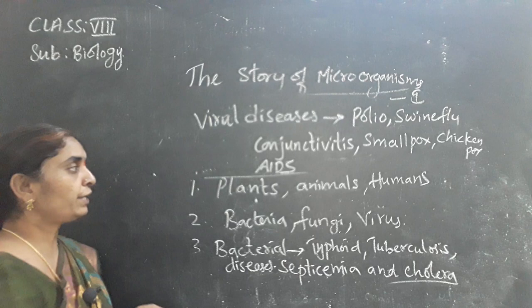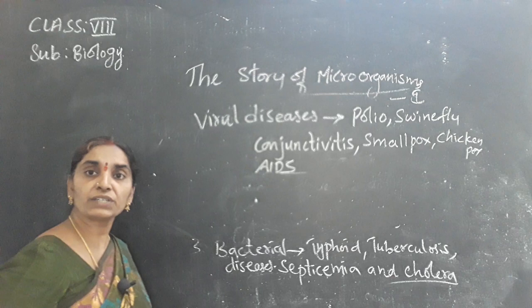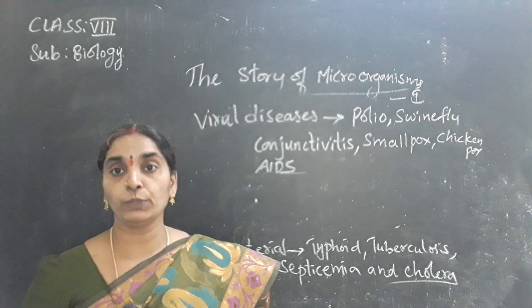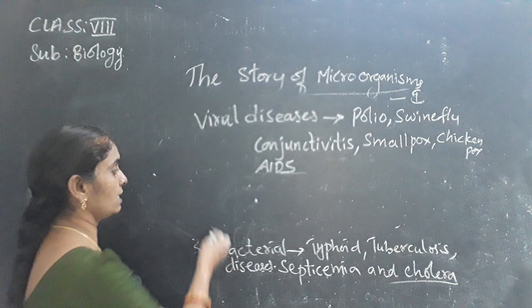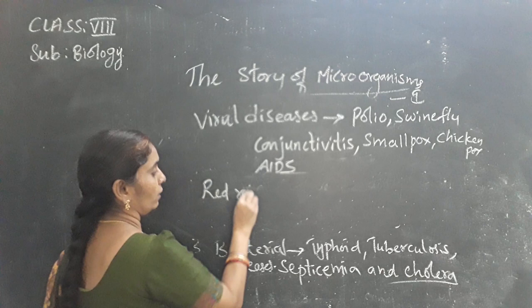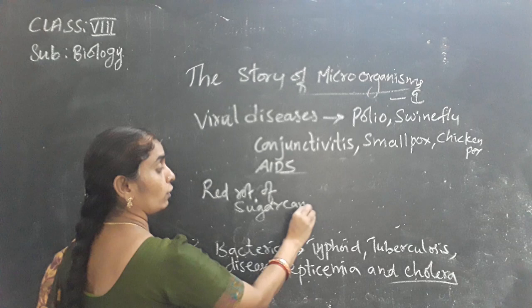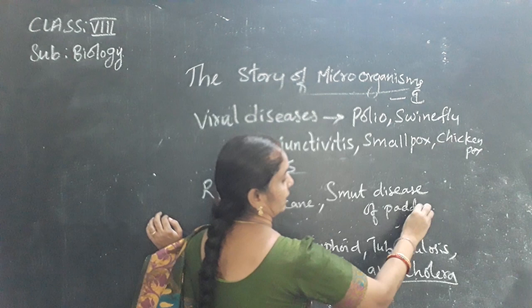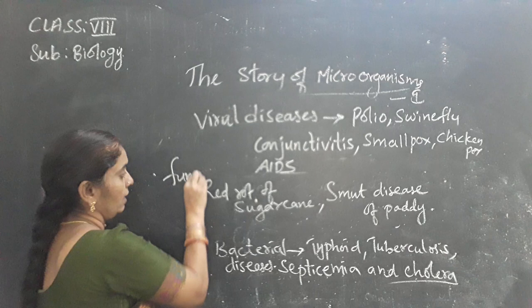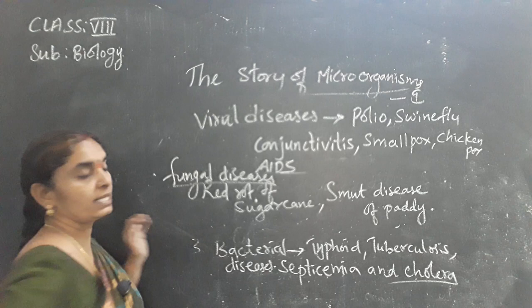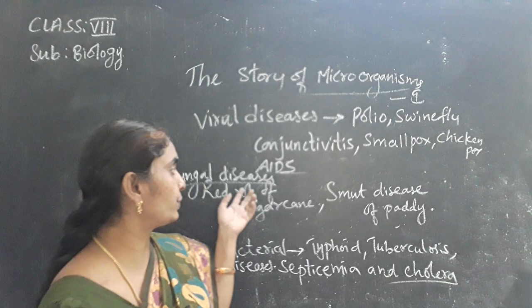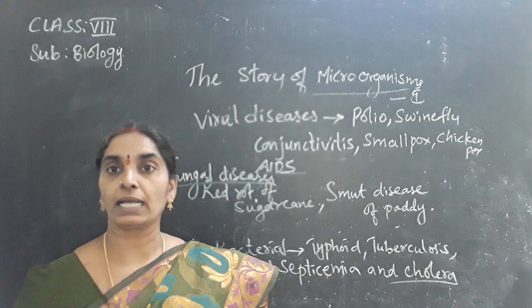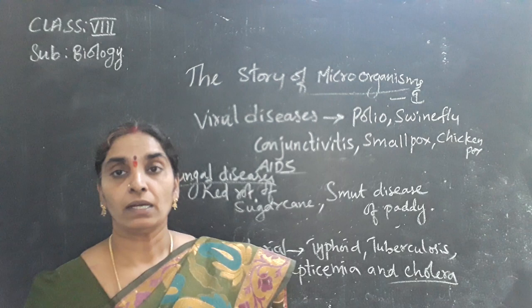Fungi diseases mostly affect plants. Due to fungus, human beings suffer from skin diseases. Plants suffer from fungal diseases like red rot of sugarcane and smut disease of paddy. These are fungal diseases in plants. So different diseases occur in plants and animals due to micro-organisms — there are harmful effects of micro-organisms.